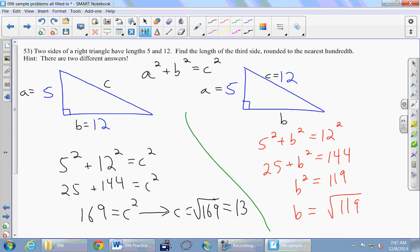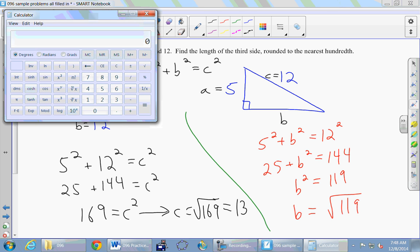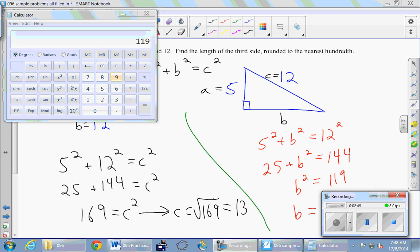So the last thing here is to just type that onto the calculator. So 119 and then square root. And it said rounded to the nearest hundredth, so 10.91.